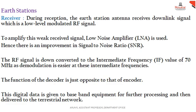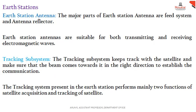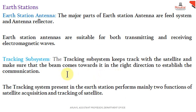The other components in the ground station are the antenna and tracking subsystem. The station antenna is a fluid system used for both transmitting and receiving electromagnetic waves. The tracking subsystem keeps track of the satellite and makes sure that the beam comes in the right direction to establish proper communication. This tracking system performs mainly two functions: satellite acquisition, and tracking of the satellite — that is, acquiring data from the satellite and tracking its position.